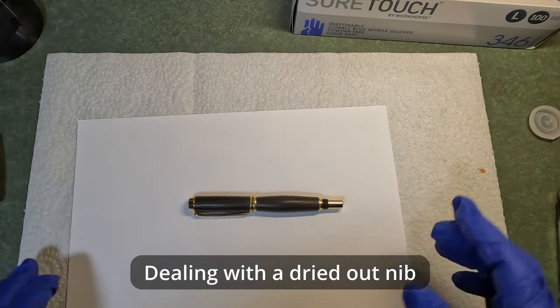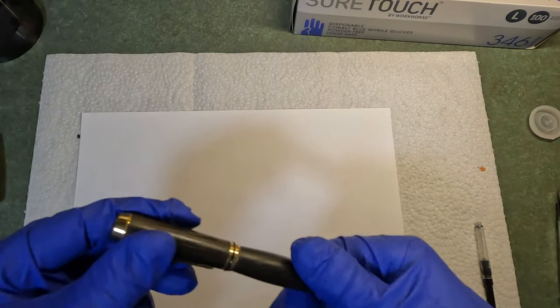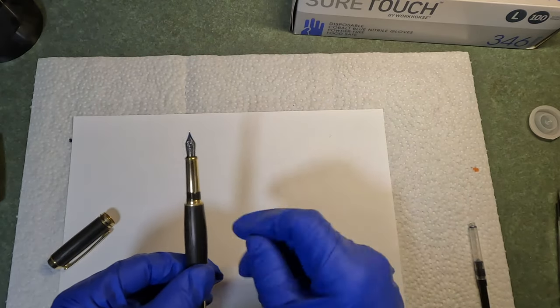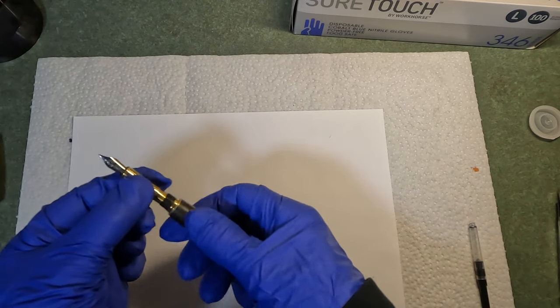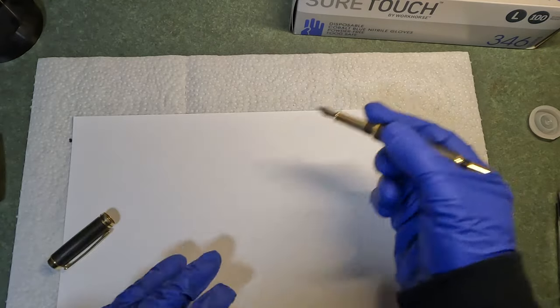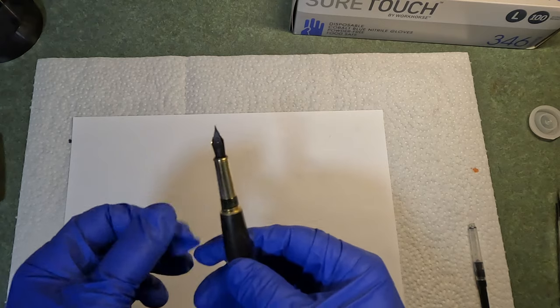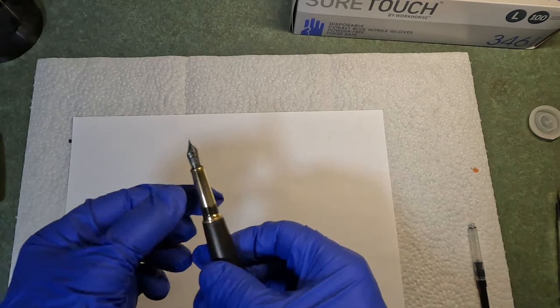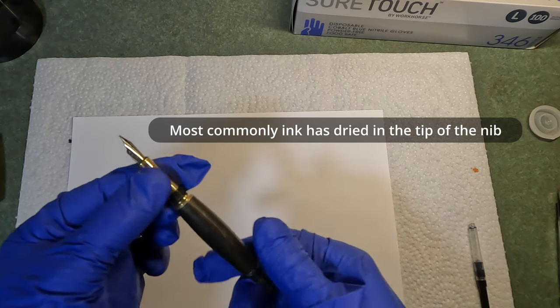So a common problem that can happen with fountain pens is when the pen is stored, and it's stored nib up, and the nib dries out. This pen is inked. The converter is full. But if I try to use it, nothing happens. So what's happened is ink has evaporated and dried inside the feed section of the nib.